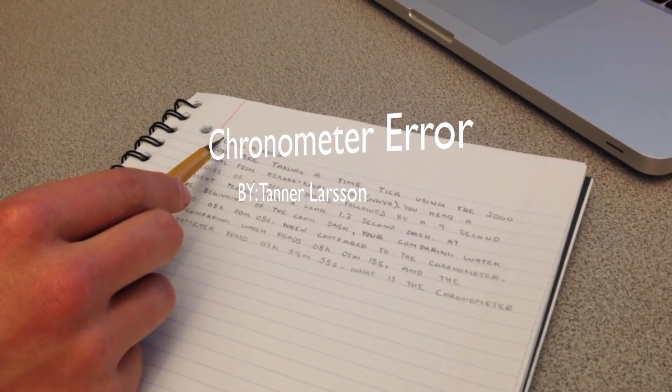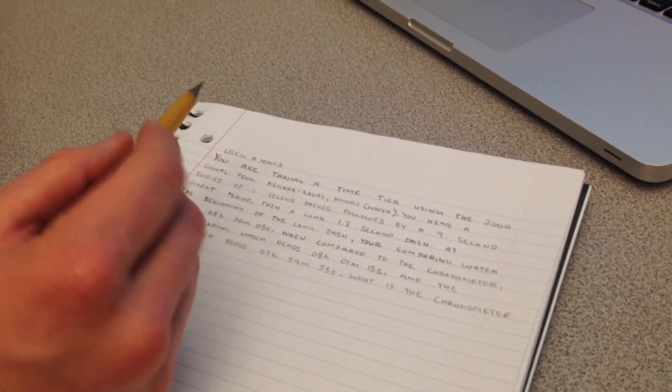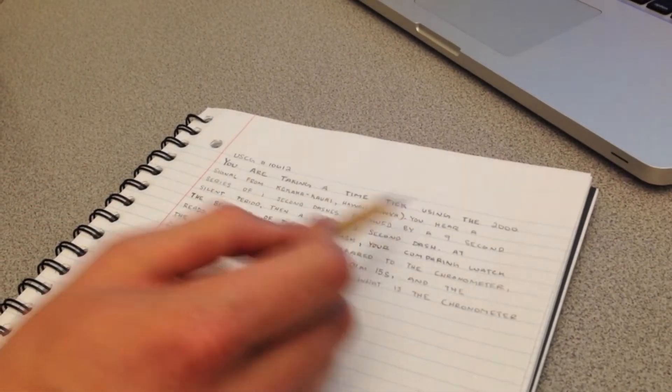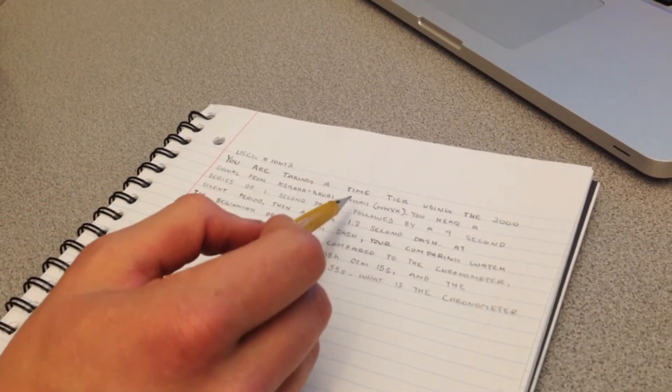U.S. Coast Guard number 10612. You are taking a time tick using the 20-hundred signal from Hawaii.